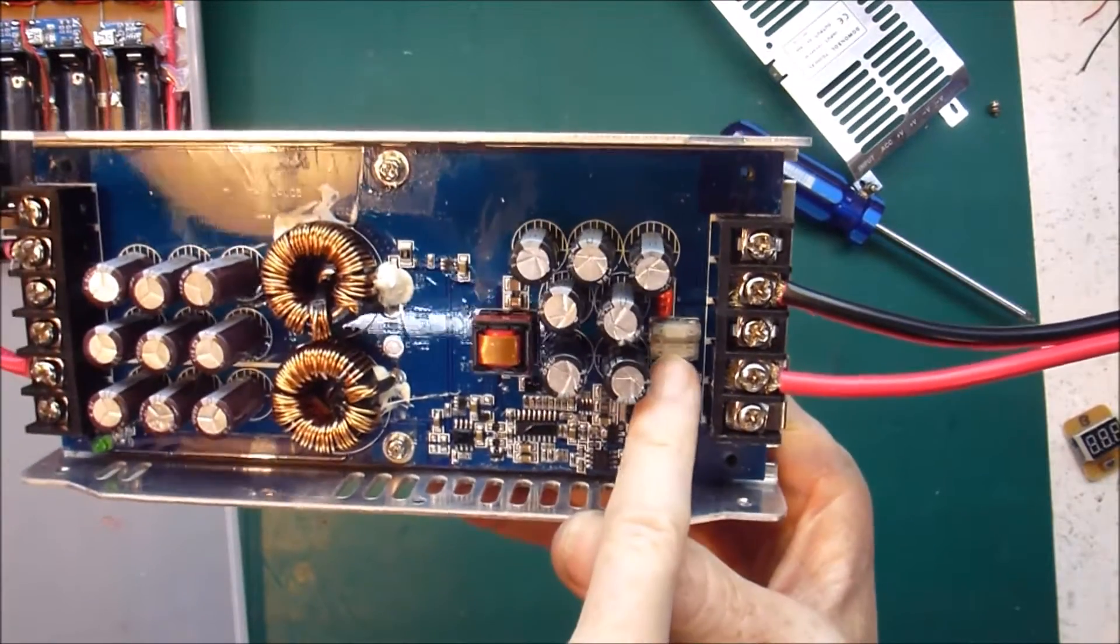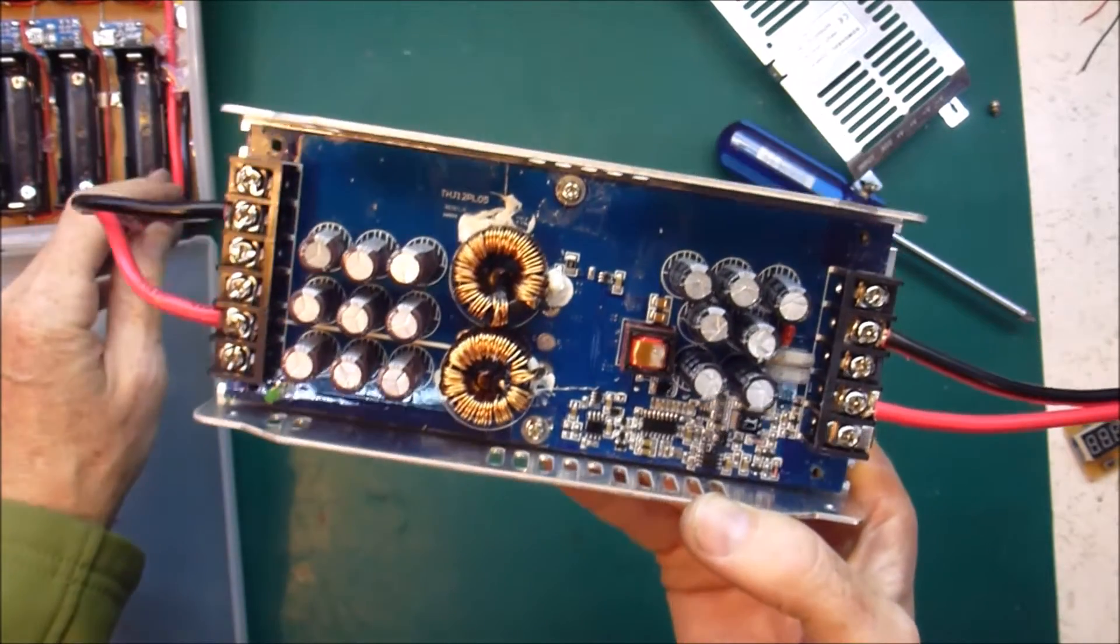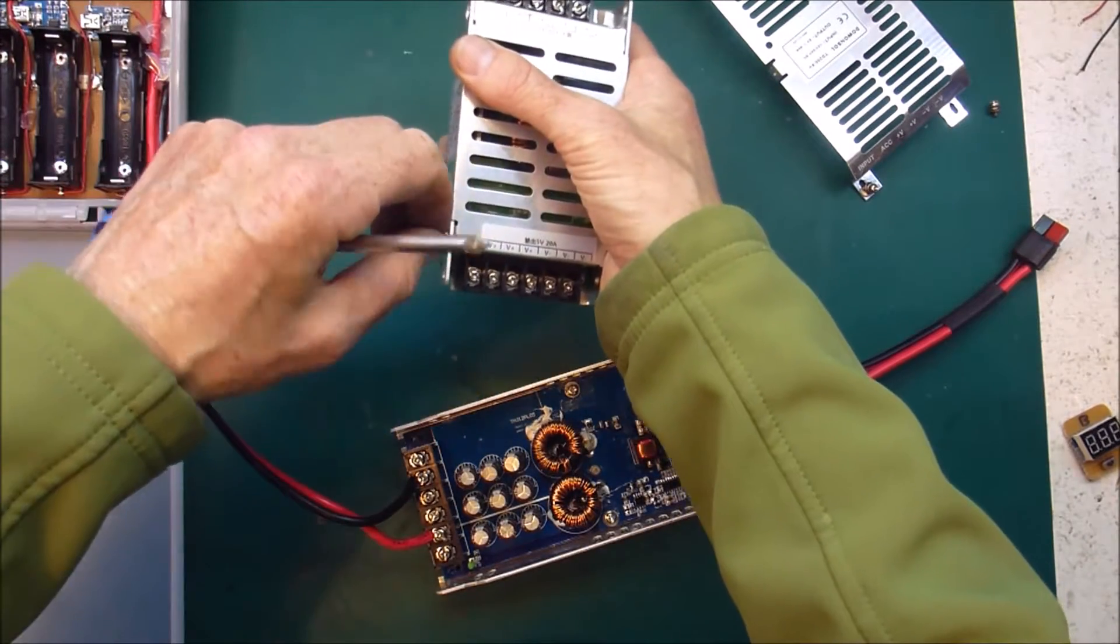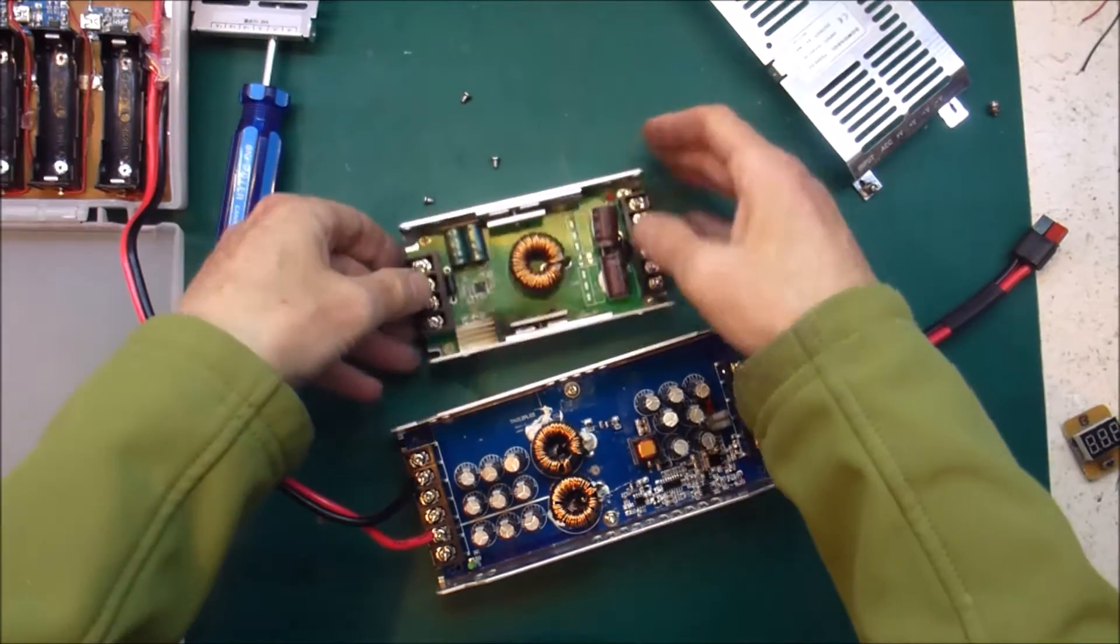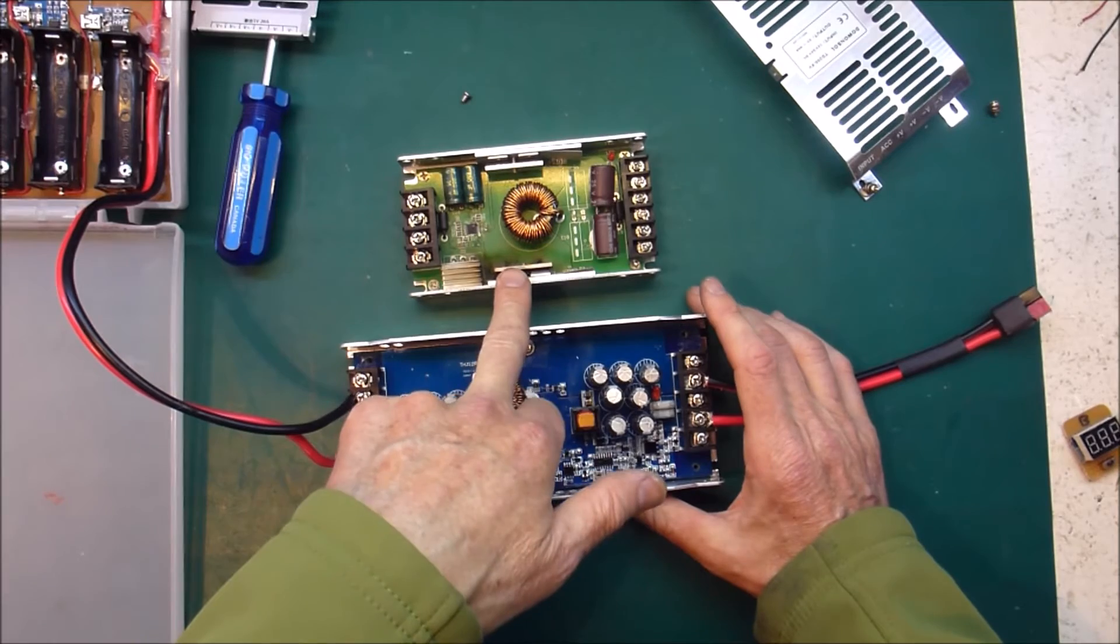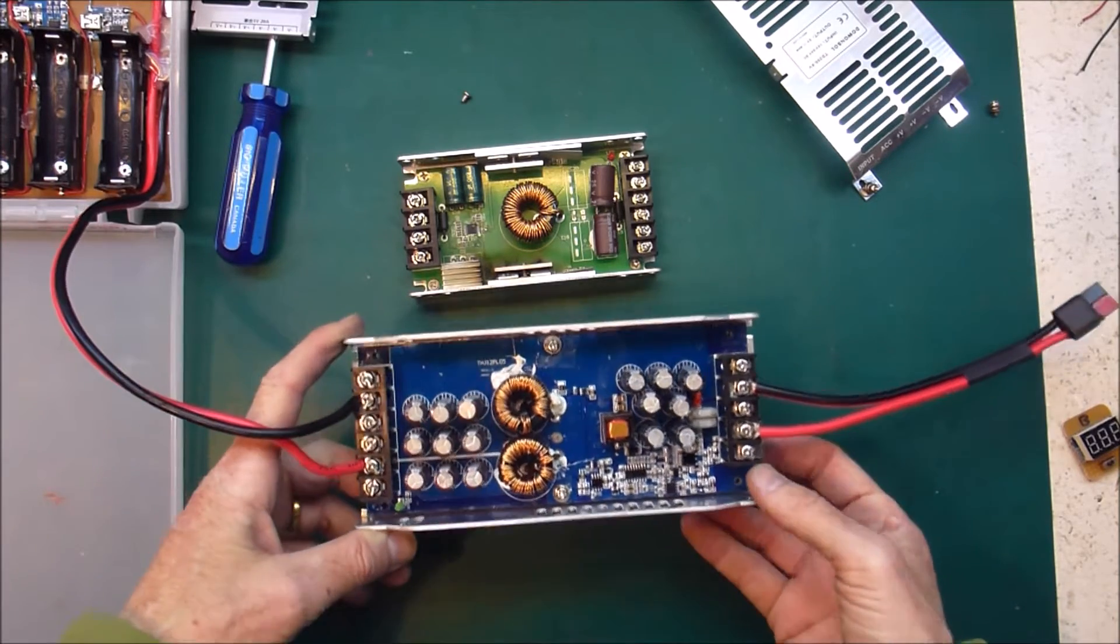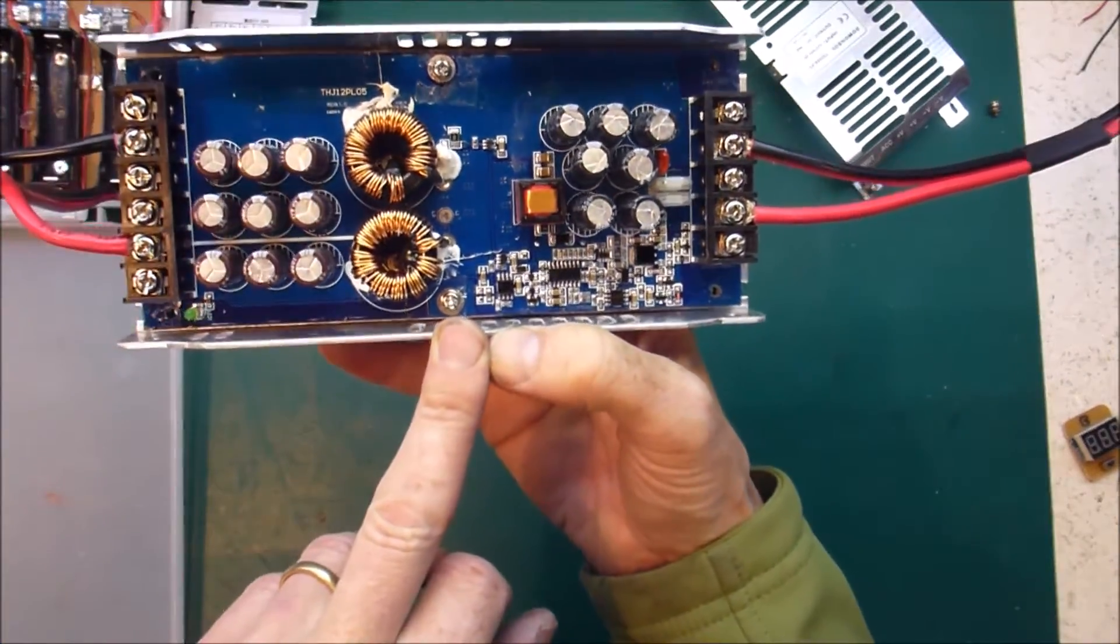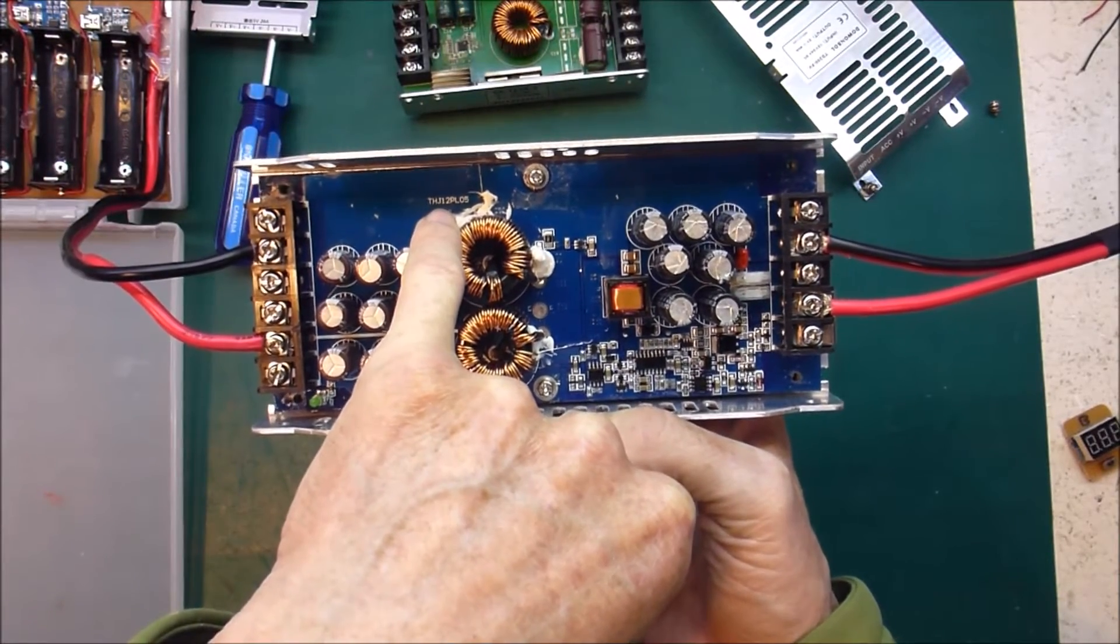It's got a couple of fuses over here, it's got lots more capacitors than the smaller unit. Let's have a look at the small one. So this is supposed to be rated at 20 amps, this is 40 amps, and there's a lot more going on in this one. It's a THJ12PL05.